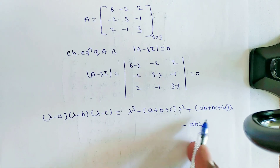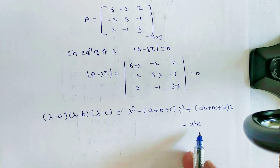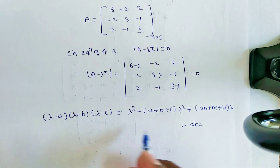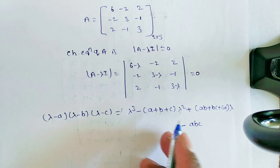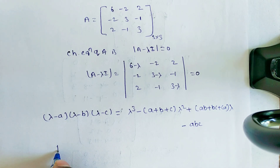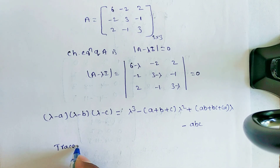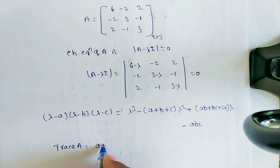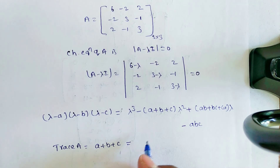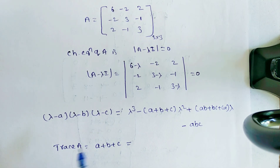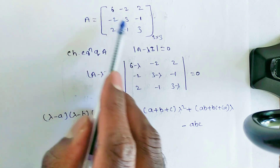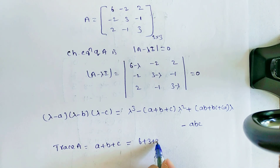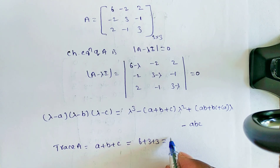Now, A+B+C is nothing but trace of A. Trace A is equal to A+B+C. For the given matrix, trace A = 6+3+3 = 12.